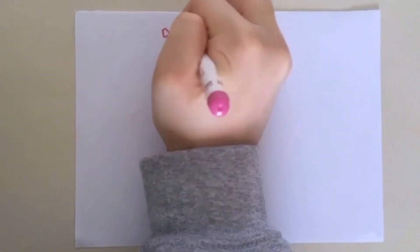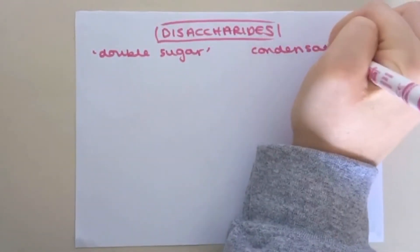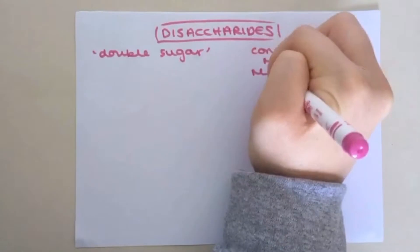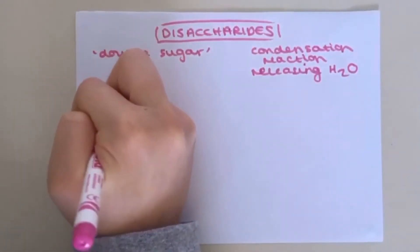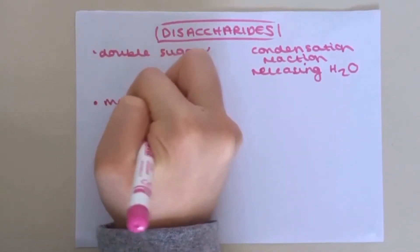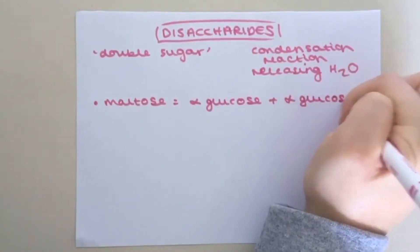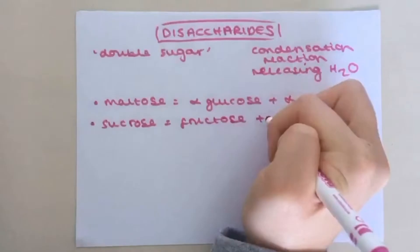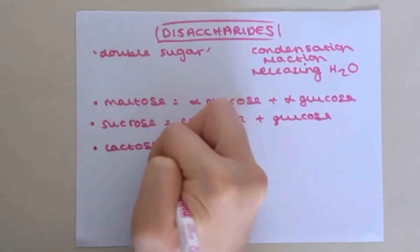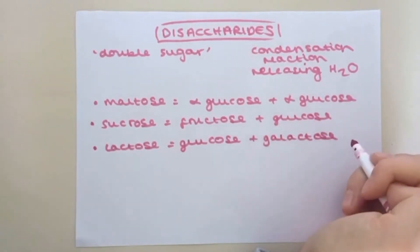The next class of carbohydrate are disaccharides, meaning double sugar. They are formed from two monosaccharides that join together in a condensation reaction, releasing a molecule of water. There are three disaccharides that you need to know. Maltose is made from two molecules of alpha-glucose. Sucrose is made from fructose and glucose. And lactose is made from glucose and galactose. Notice that all three contain glucose.